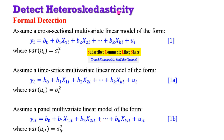Now let us consider formal detection of heteroskedasticity. On the screen, I have three equations: a cross-sectional equation (equation 1), a time series equation (equation 1a), and a panel data equation (equation 1b). Equation 1 is cross-sectional given the subscript i; equation 1a is time series with subscript t; and equation 1b is panel data with subscript it. You can also see the construct of the variance which shows heteroskedasticity, with subscripts i, t, and it respectively.